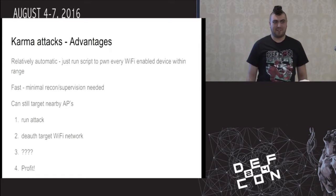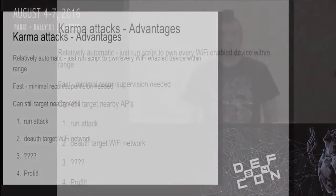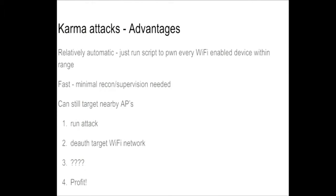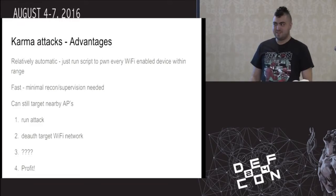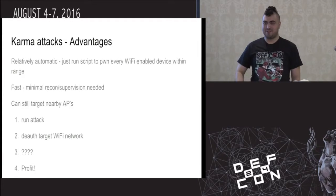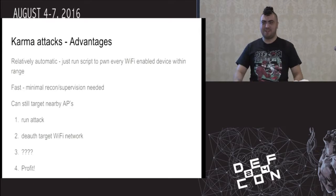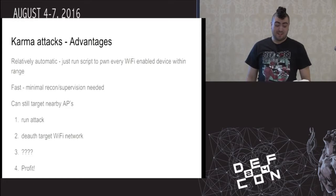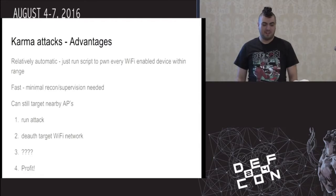This is the kind of tech you often see with — I can't really name brand names — but for example, these very fruity, tropical-looking fruit-named devices that you tend to buy at security conferences. This is how they work. You set one up, listen for probe requests, and respond to all of them. The device thinks it's a legitimate AP and connects. It's a relatively automatic process — you turn it on, the script runs, and you just start pwning everything nearby. They're fast, with minimal supervision or recon required, and you can still target nearby APs.